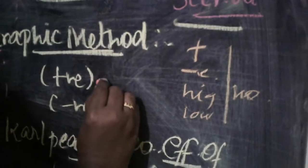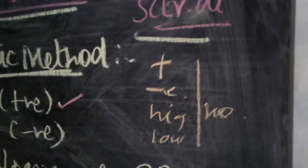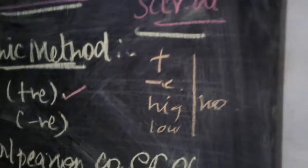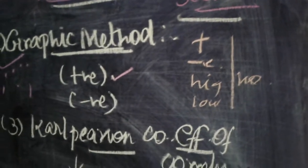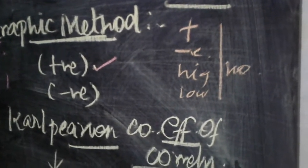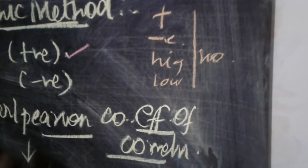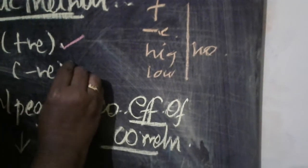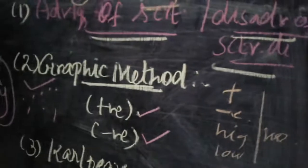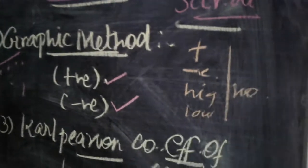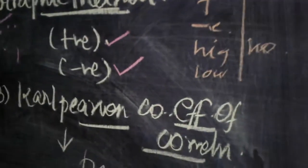Under graphic method, positive correlation means both variables move in the same direction. Negative correlation means one variable increases while the other variable comes down — that is called negative correlation.